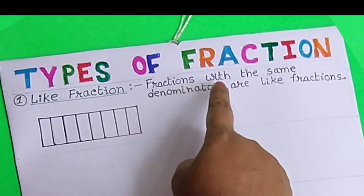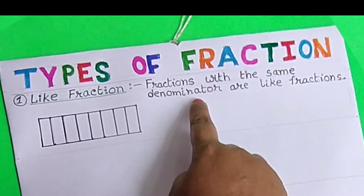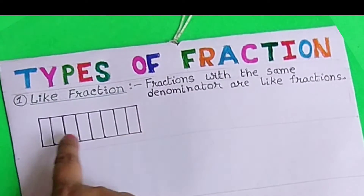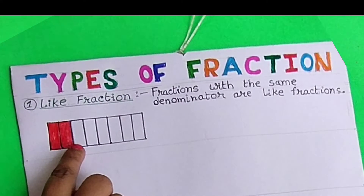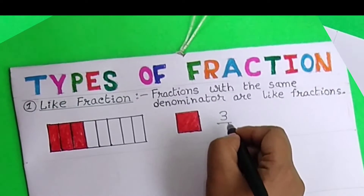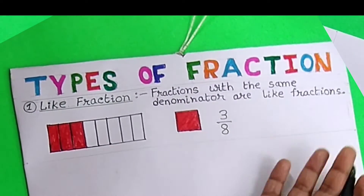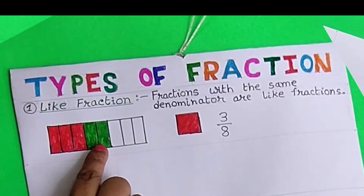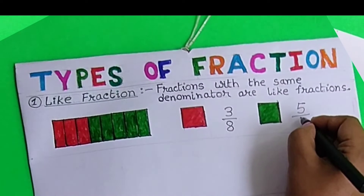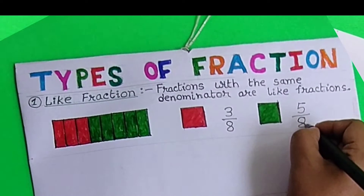Like Fractions: Fractions with the same denominator are like fractions. For example, there are 8 equal parts, out of which 3 parts are red. So we can represent it as 3 over 8 using fractions. Now, there are 5 green parts. So we can represent it as 5 over 8. As you can see, both the fractions have the same denominator 8. This kind of fractions are called like fractions.